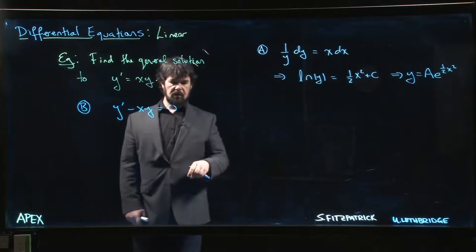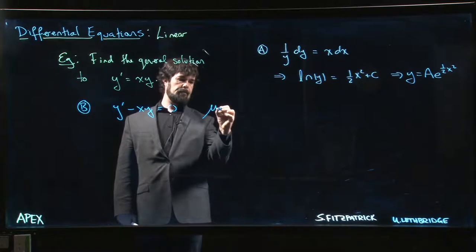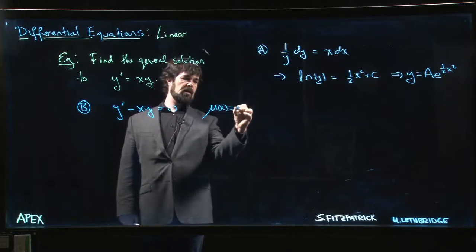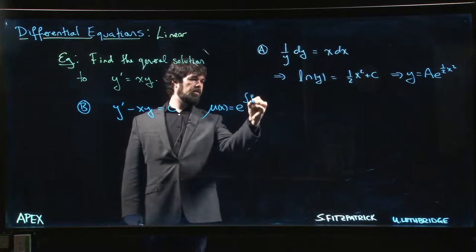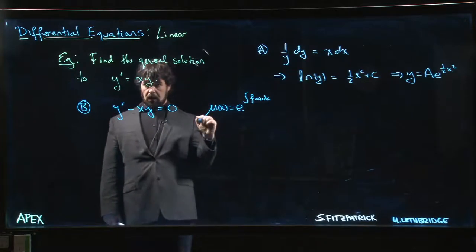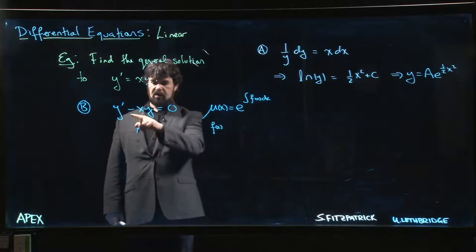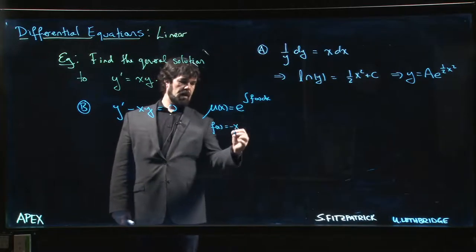And we look for the integrating factor. So remember the integrating factor looks like e to the integral of f(x) dx. In our case, f(x) is minus x. f of x is always the coefficient for y.